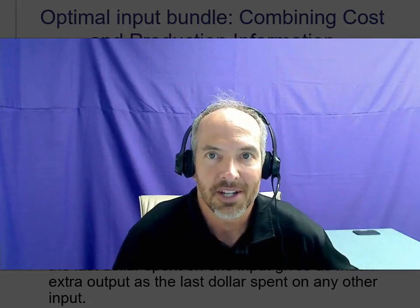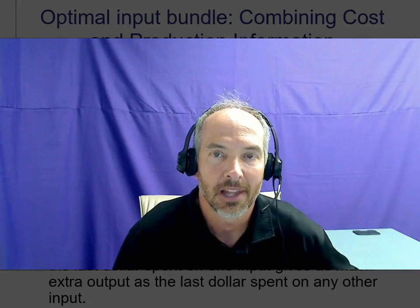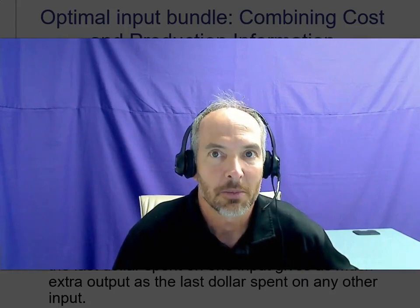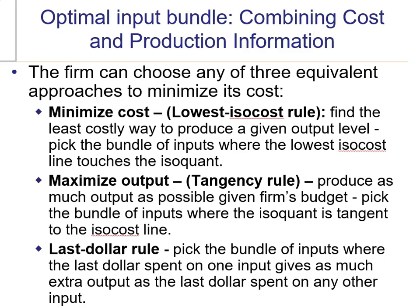This video will discuss cost minimization focusing on the last dollar rule. This is our third part of the cost minimization series, where part one focused on minimizing cost using the lowest isocost rule, part two focused on maximizing output given a firm's level of isocost using the tangency rule, and this third one is probably the most intuitive of the three approaches. This is known as the last dollar rule.